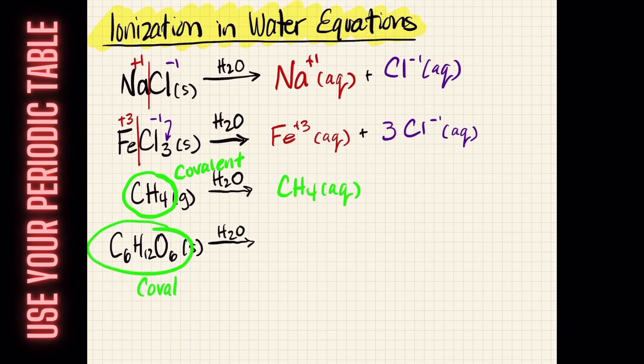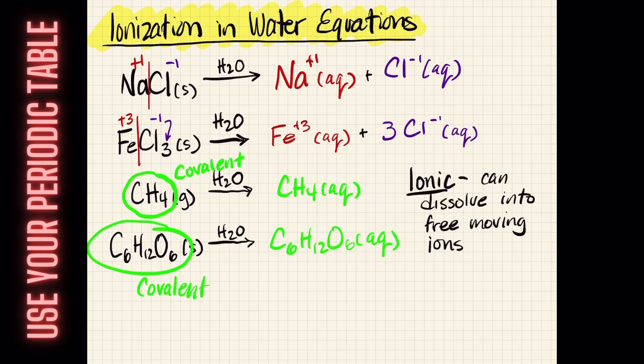Same thing for our next one. We have C6H12O6, which is glucose, otherwise called sugar, and because it's also covalent, it will not physically break down like the ions above, but instead will just be an individual molecule that is in solution.